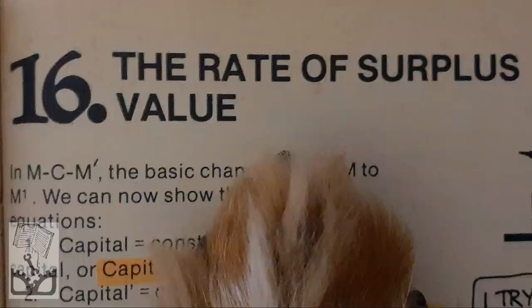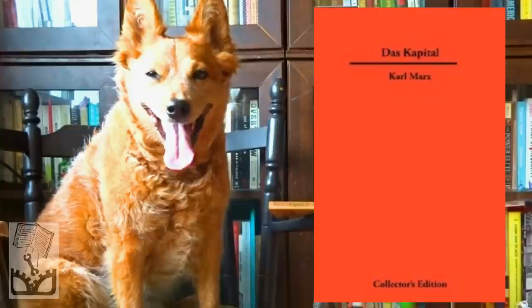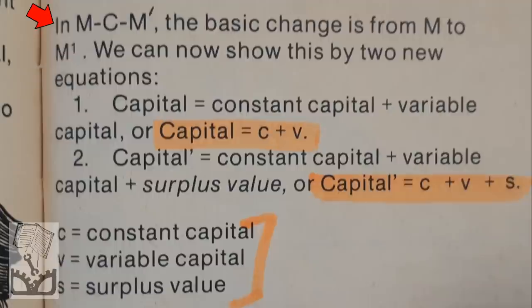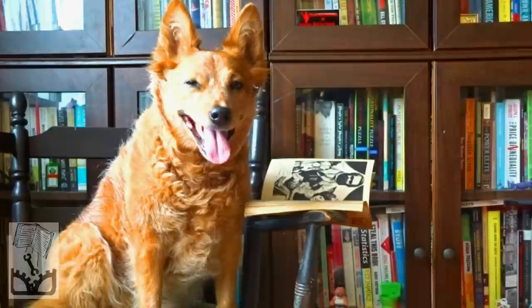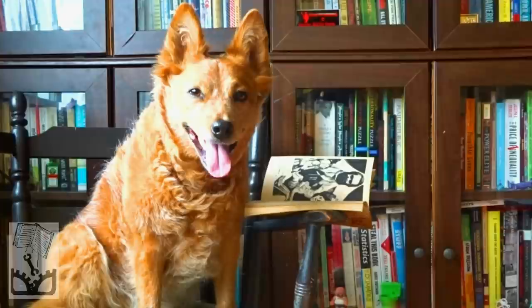Chapter 16: The Rate of Surplus Value. Capital is very dense and the math aspects were going to creep in sooner or later. Smith and Evans state: in money-commodity-money-prime, the basic change is from M to M-prime, shown by two equations. One: capital equals constant capital plus variable capital. Two: capital-prime equals constant capital plus variable capital plus surplus value. In layman's terms, if you are working class, you are getting ripped off — because the cost of raw materials plus private ownership of the means of production plus your labor power, minus your surplus value added through socialized production and expropriated through private accumulation by the capitalist, equals — well, you're not seeing that value.